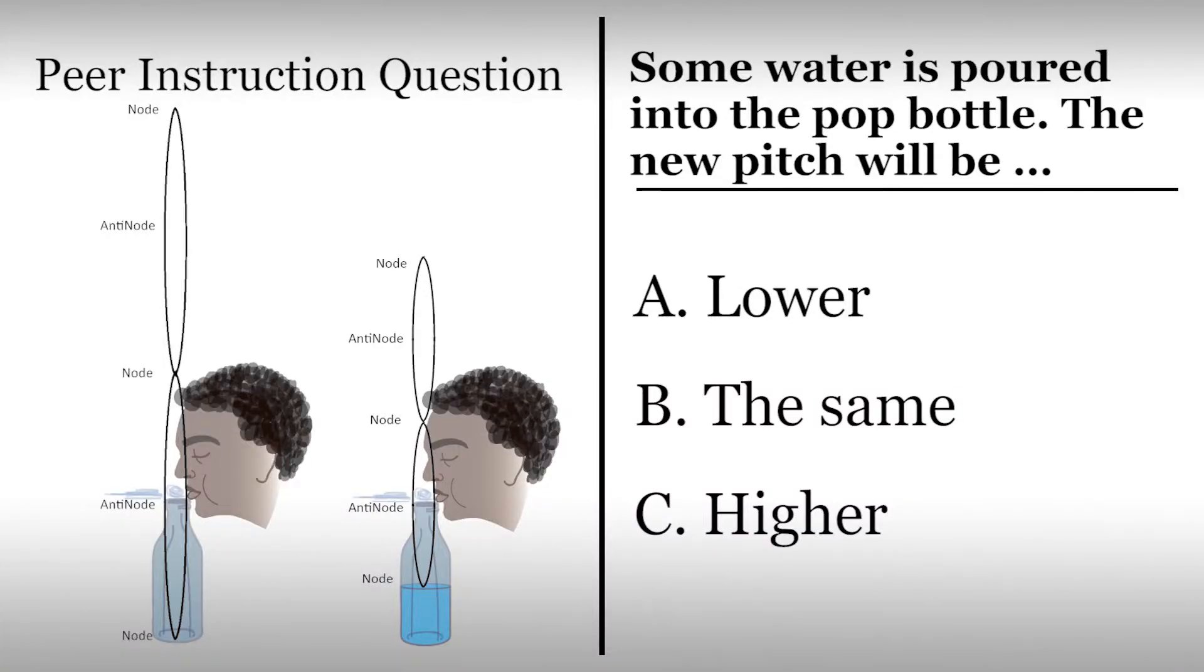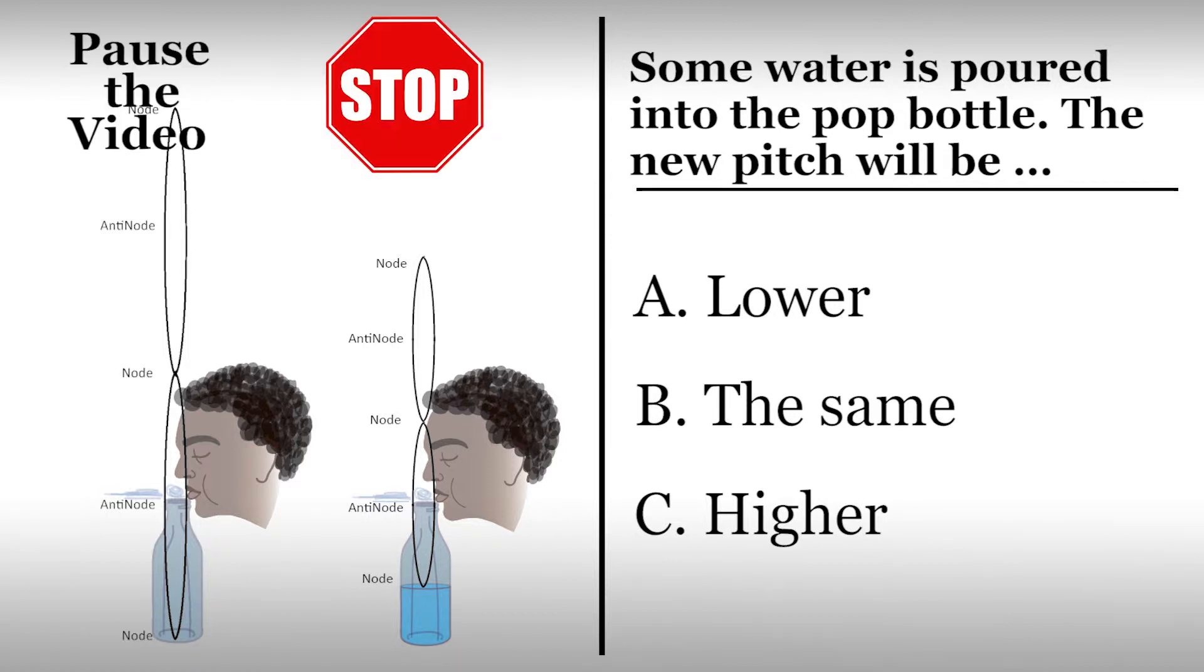Let's explore this further using a peer instruction question. Supposing that we blow over the pop bottle and then pour some water into the bottle and blow over it again. How will the pitch change? Classroom students should follow normal procedures or instructor guidelines. Viewers not in a classroom should record your vote and explain your reasoning on a piece of paper. Please pause this video and answer the question.